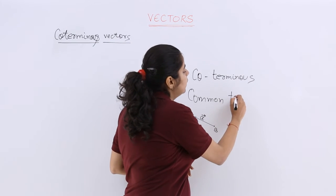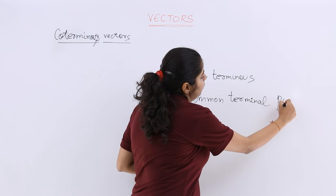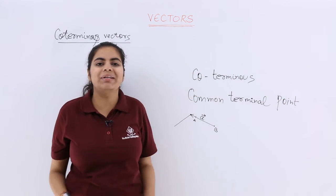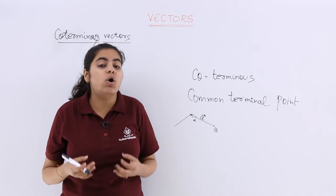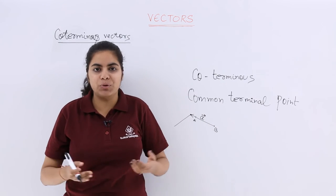So I write here: common terminal point. And that is what is known as coterminous vectors. It may also be known as coterminous vectors in some of your books.